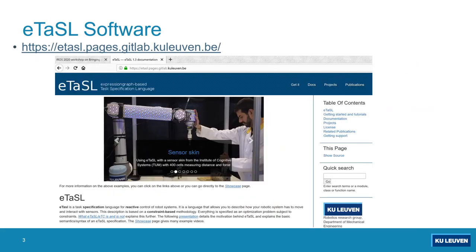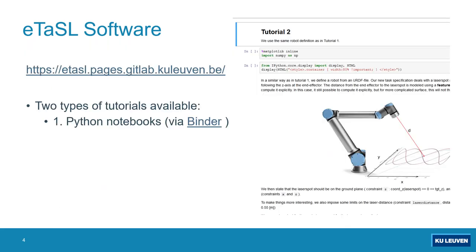On this link on the page you'll find much more information on ETASL, including documentation and download instructions. There are two types of tutorials available in ETASL. On one hand we have the Python Notebooks, which are accessible via mybinder.org. This means you can access them from your browser window — you don't need to install anything. This is an ideal way to quickly get to know ETASL and to do a few experiments with it.